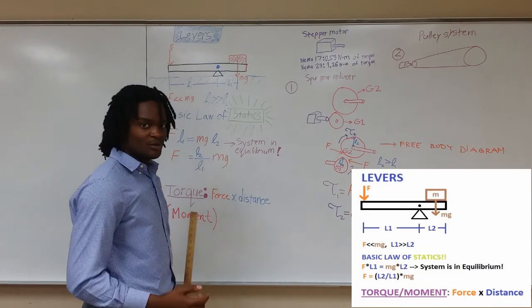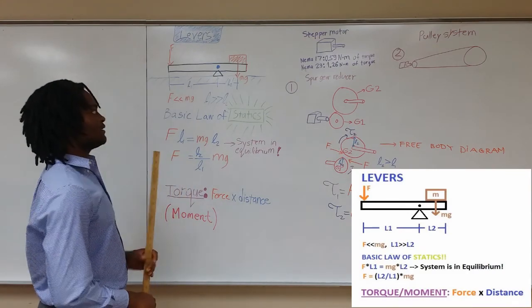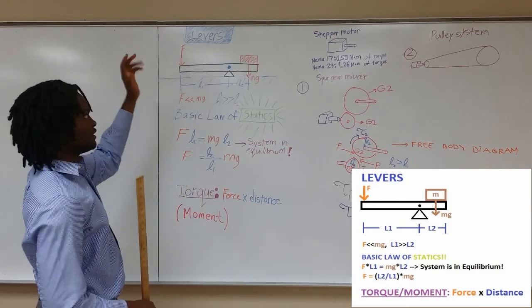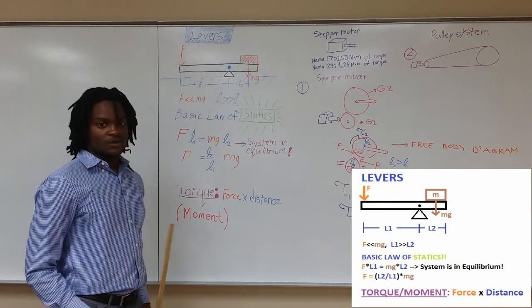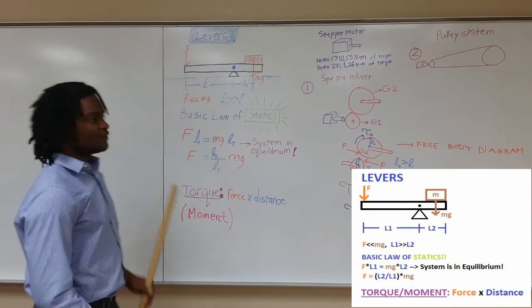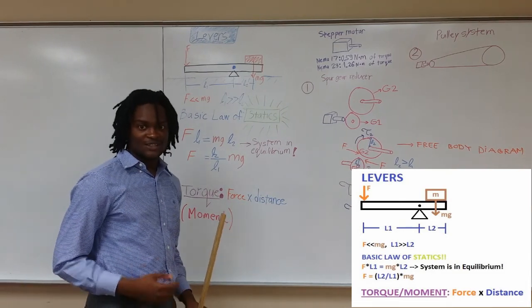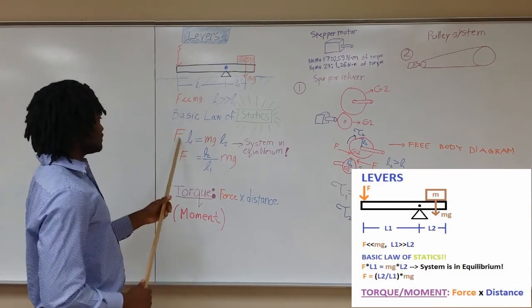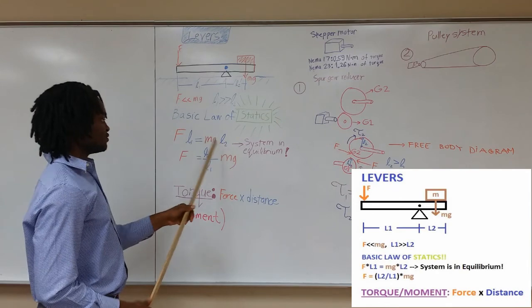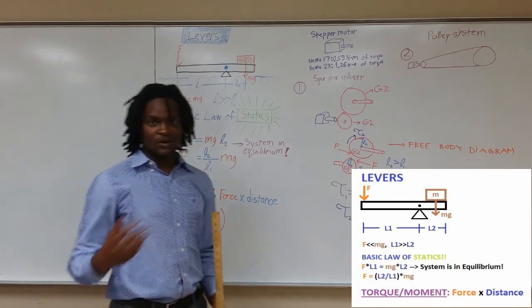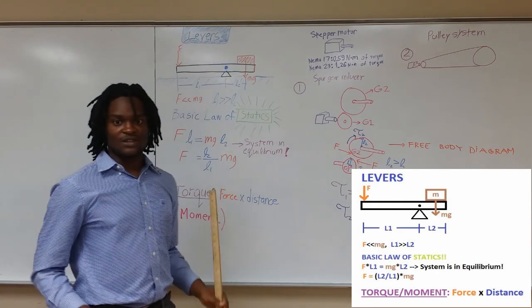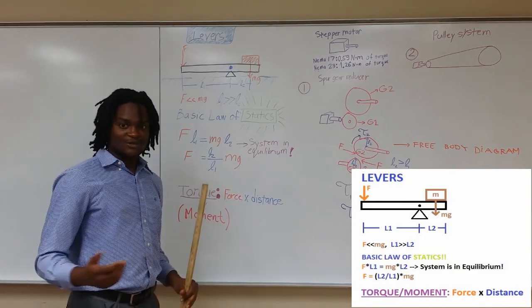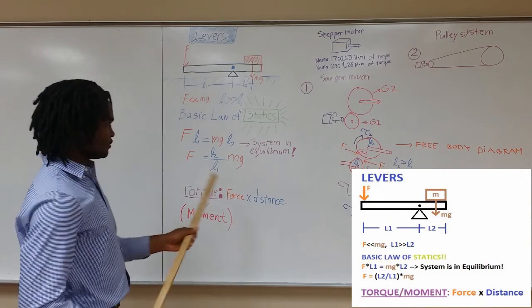From the diagram on the board we have a lever with a box that exerts a force mg on one end of the lever and we have a force F exerted on the other side. So why can we lift a box with a force F? From the basic law of statics, we can tell that the system is in equilibrium if force times distance L1 is equal to mg times L2. So since L1 is greater than L2, we can see that the force necessary to lift the object is smaller than the weight. Force times distance is called torque, or moment.